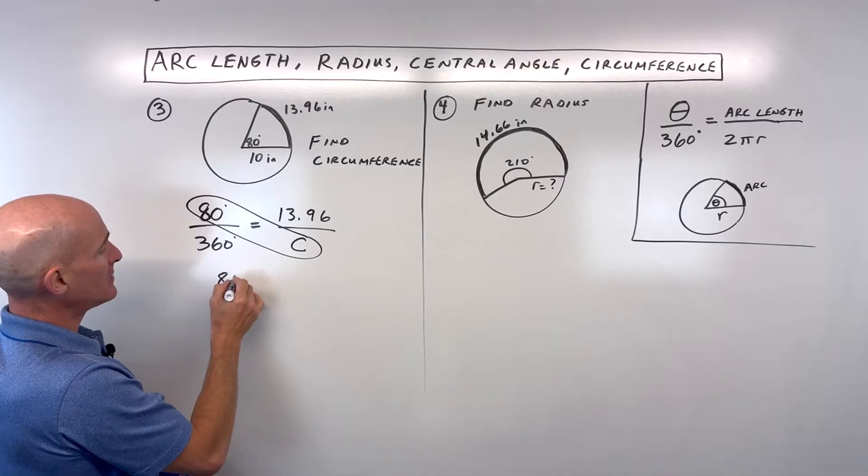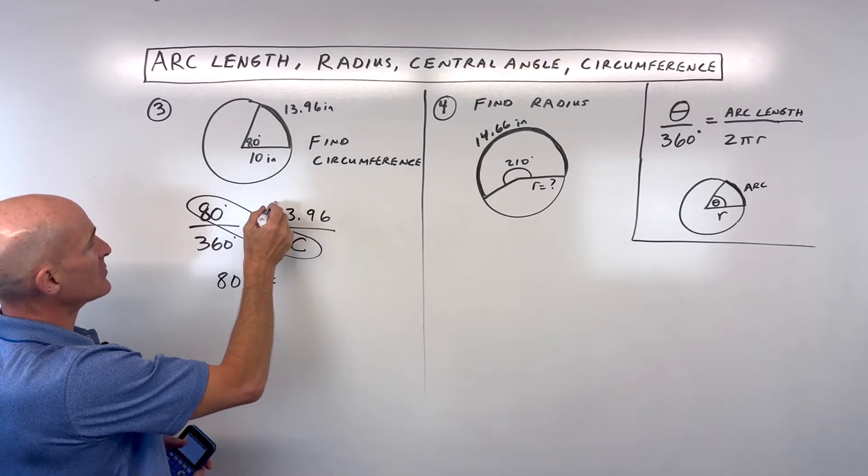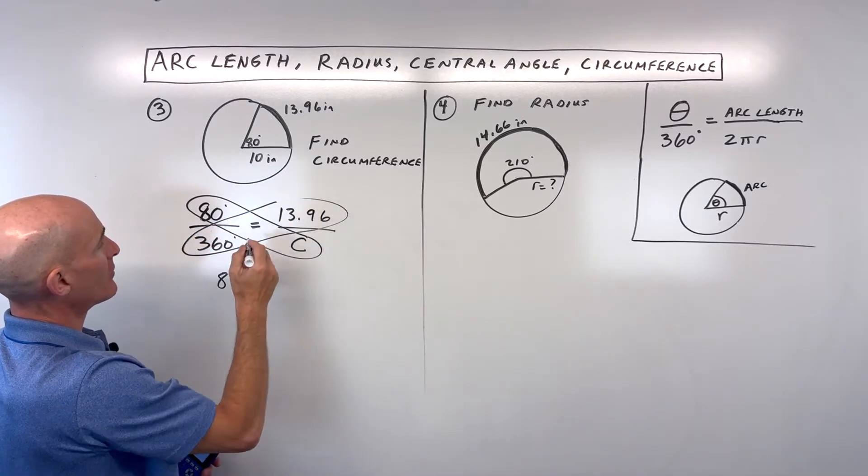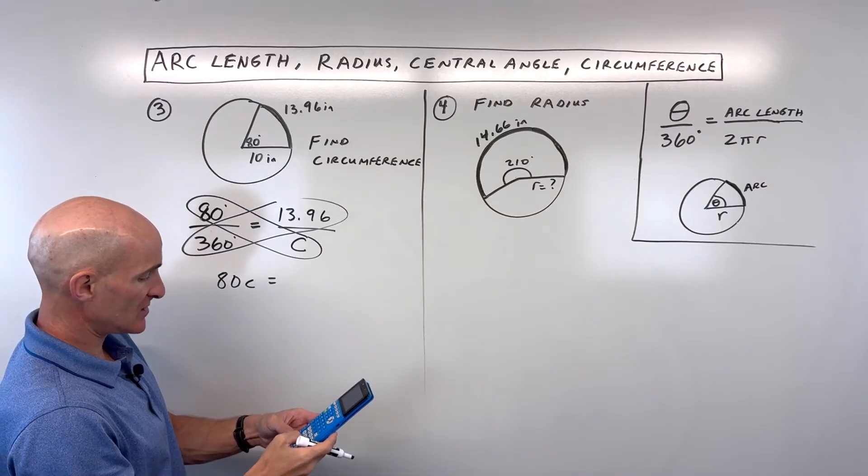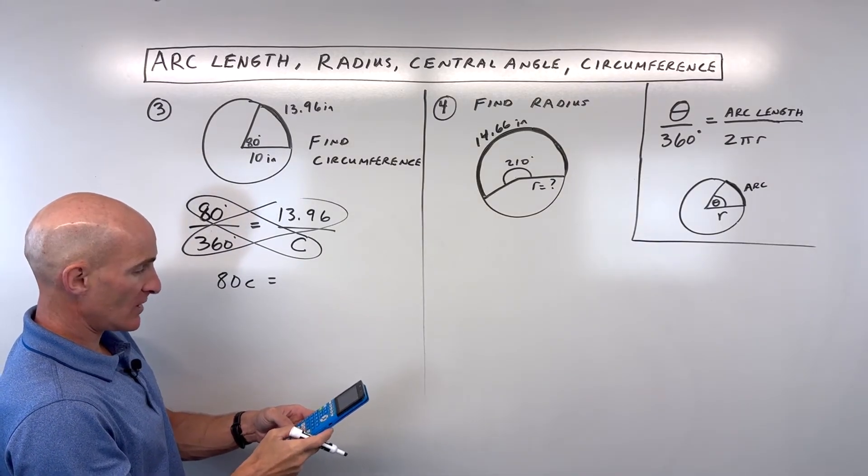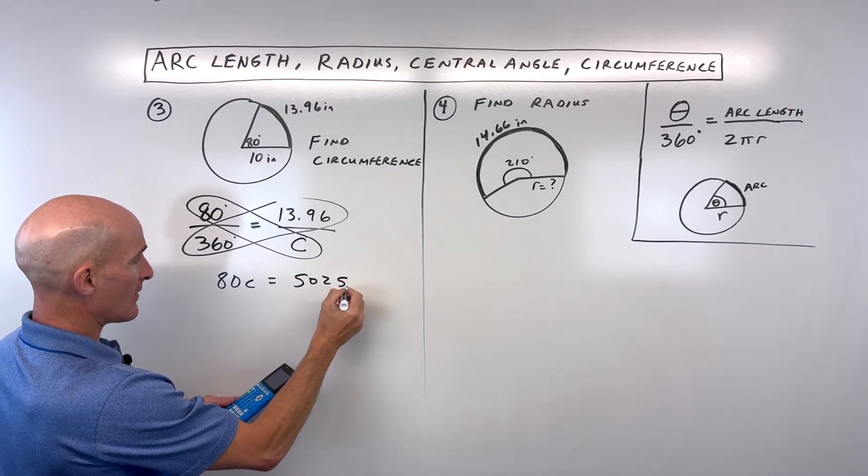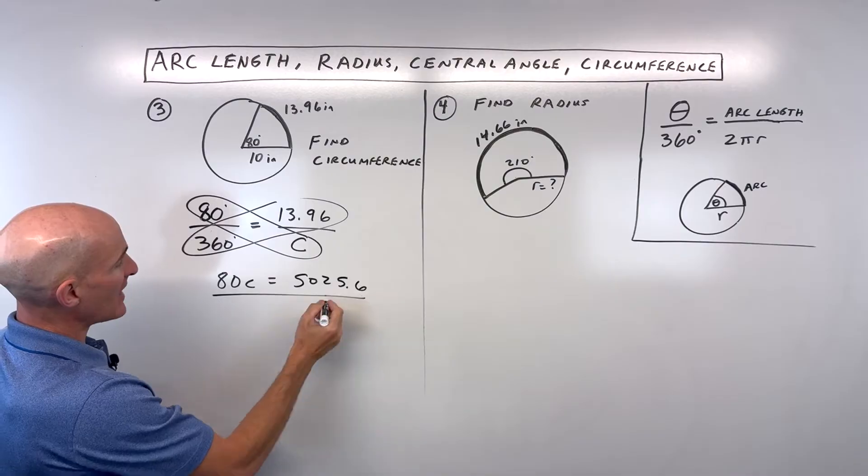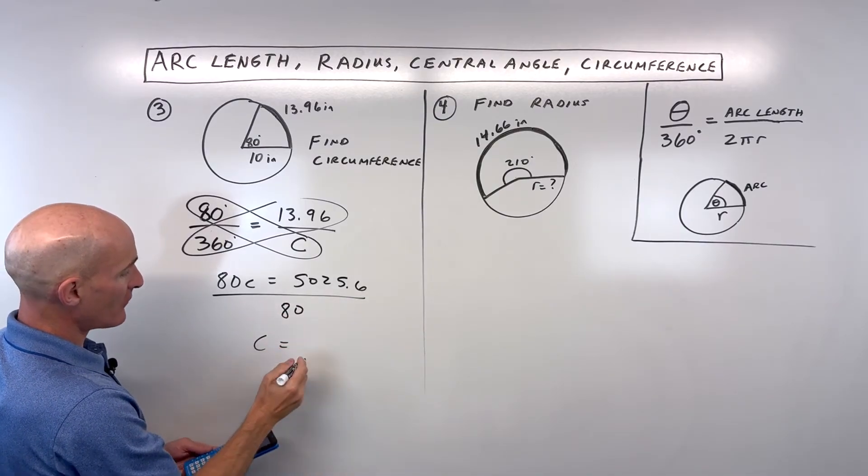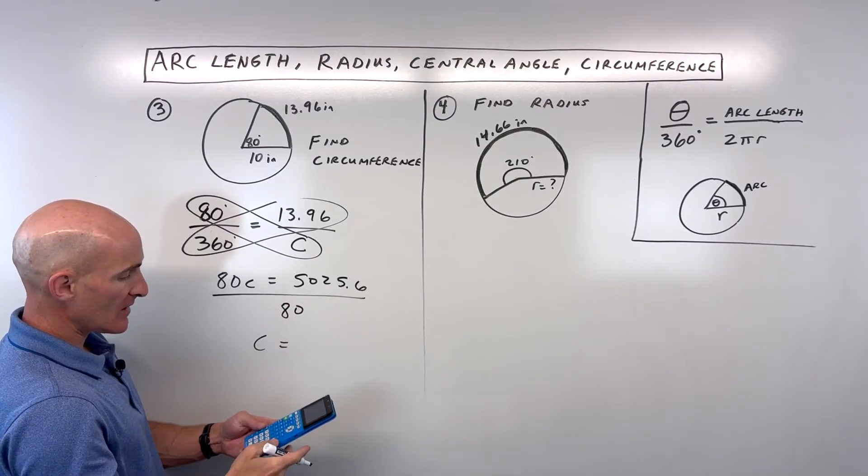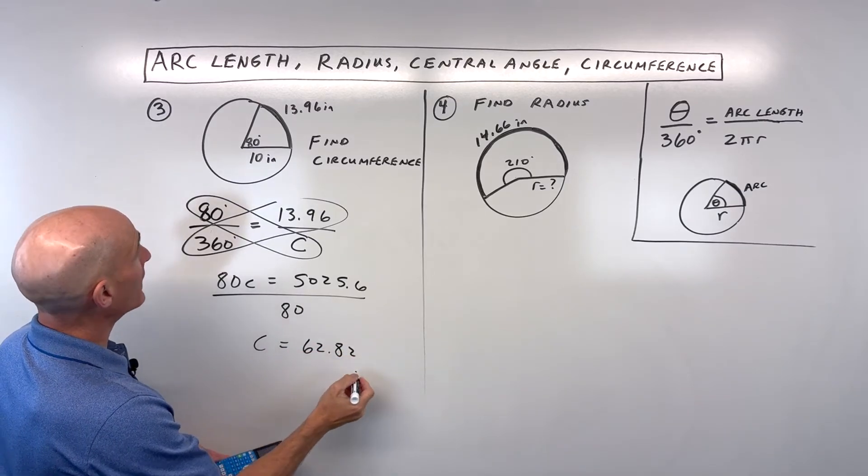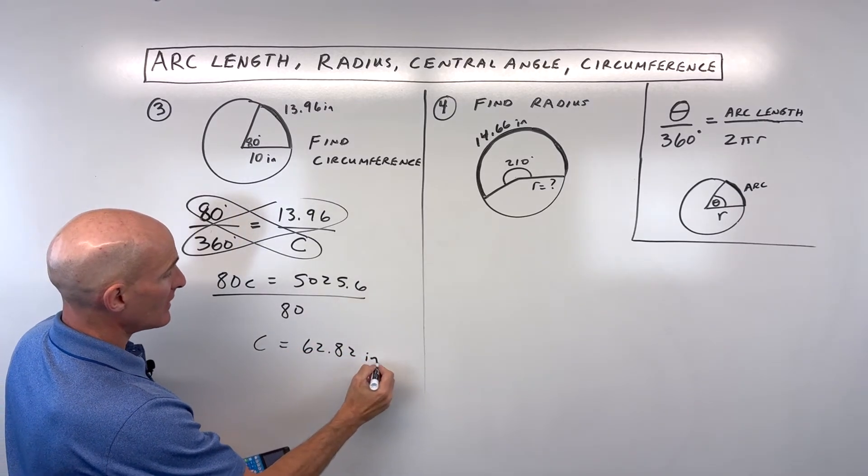So we've got 80c equals 360 times 13.96. So 360 times 13.96, I'm getting 5,025.6. And we'll divide both sides by 80 to solve for our circumference. So that comes out to 62.82 inches.